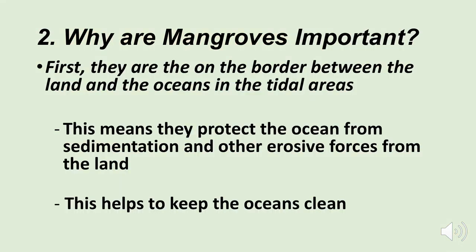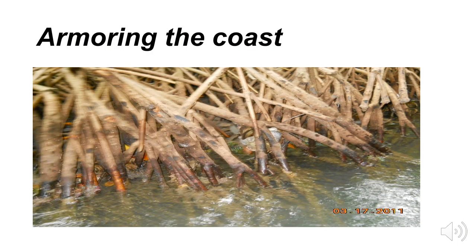Why do we talk about mangroves when we talk about the oceans? Mangroves are considered just as important as coral reefs. They're on the border between the land and the oceans in the tidal areas. They protect the ocean from sediment — remember, sediment causes a lot of problems in oceans — and the mangroves trap a lot of the sediment coming off the land. They grow in it and protect the ocean from some of the erosive forces from the land, so mangroves help keep the oceans clean.